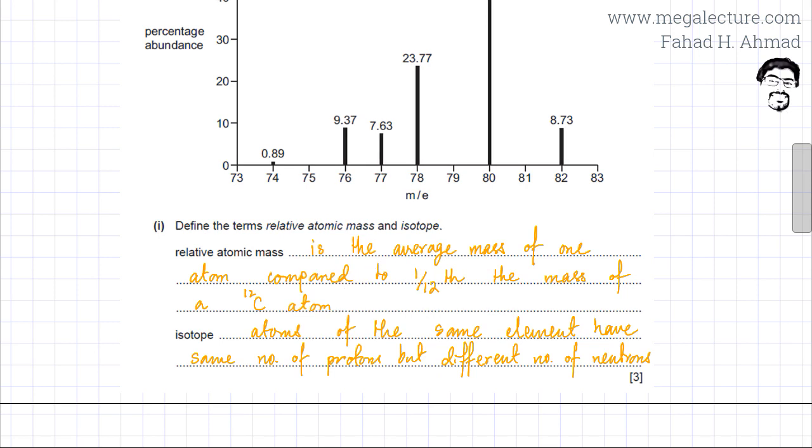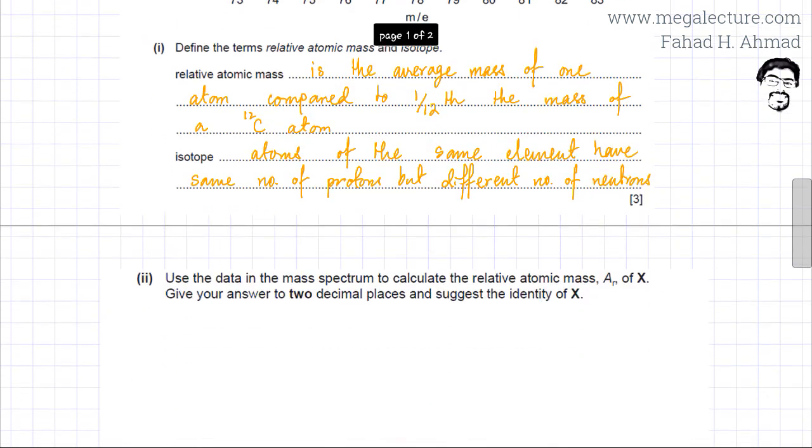And similarly, the definition for the term isotope is that the atoms of the same element having same number of protons but different number of neutrons. Now moving to the next part of the question.